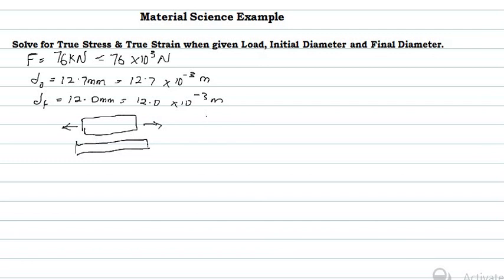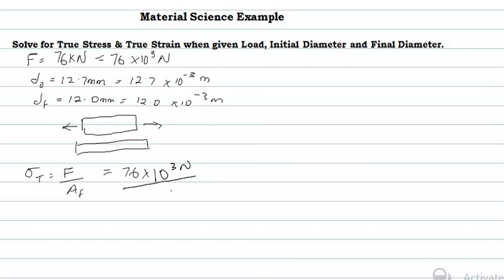To solve this question, we recall that true stress equals force divided by the final area. Since we are given the final diameter, we can calculate the final area. Because we are given a diameter, the cross-section is a circle, so the area is πd²/4.